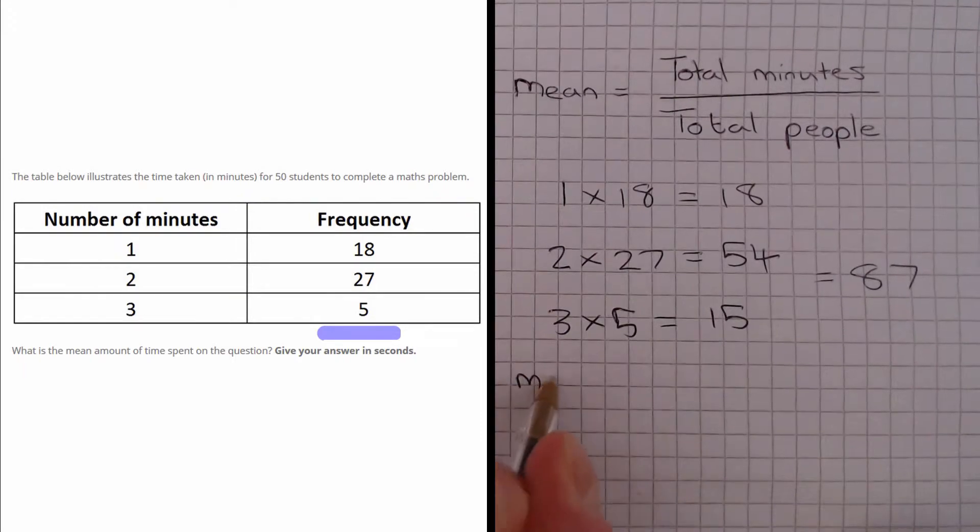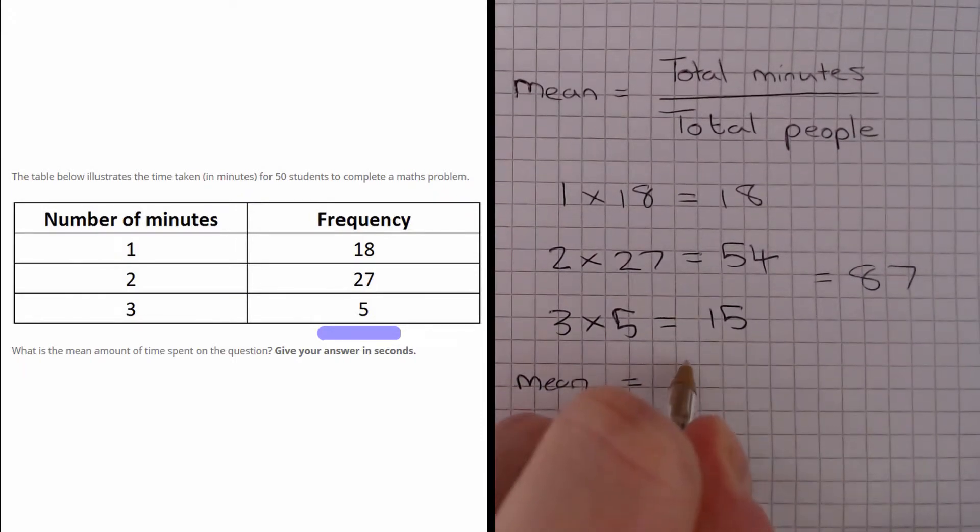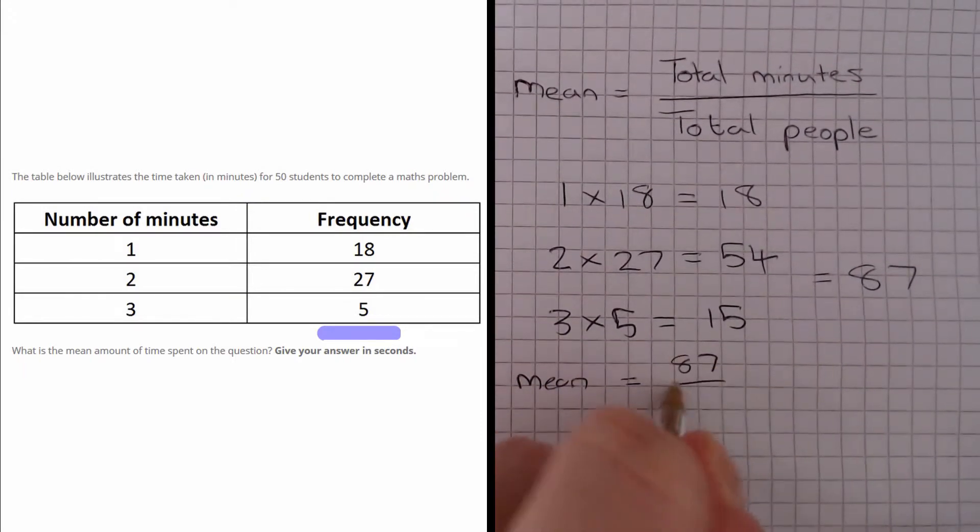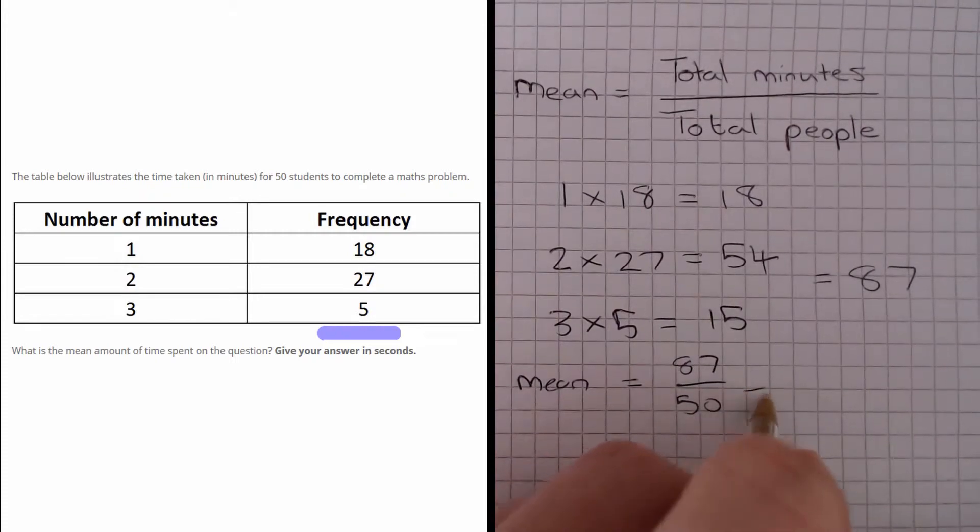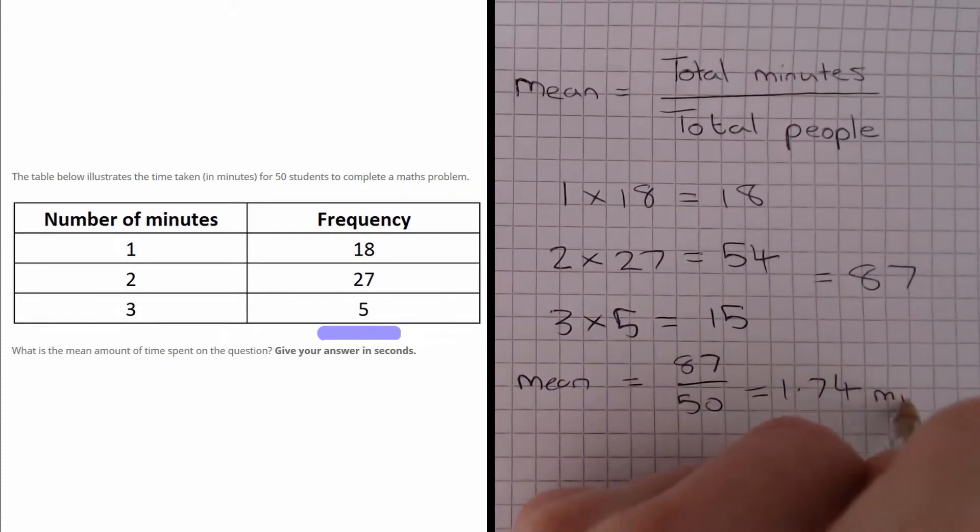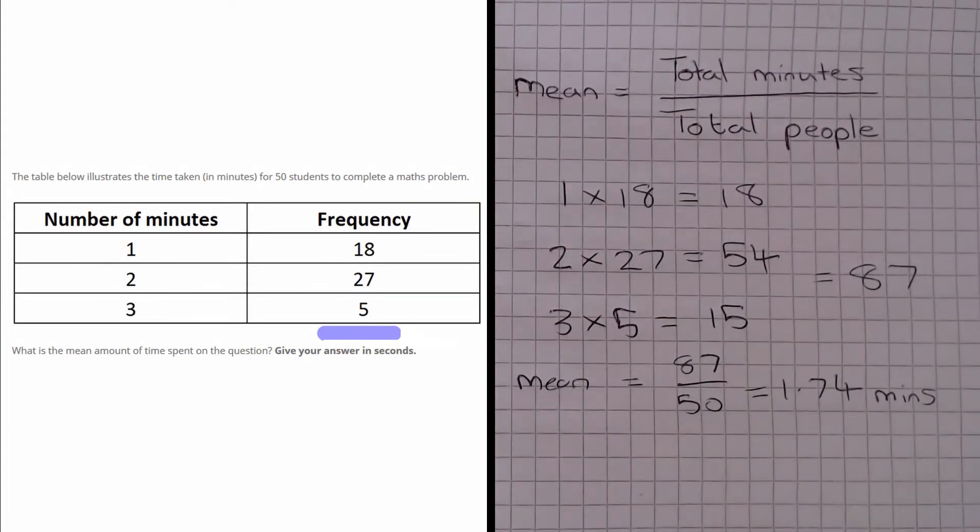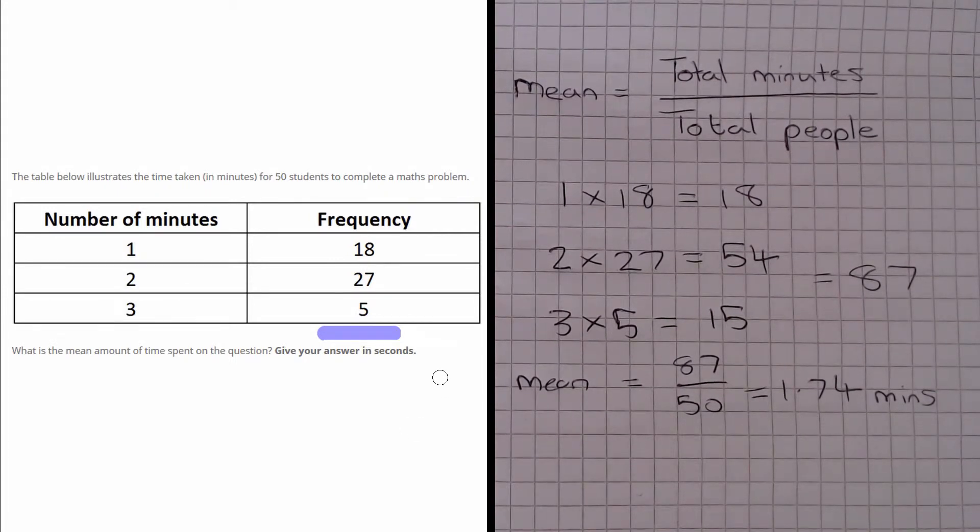So of course, the mean is going to be 87 divided by 50, which will give us 1.74. But that's 1.74 minutes and the question asks for our answer in seconds.